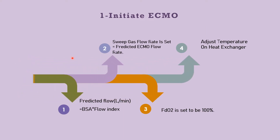After connecting the circuit, we will start to initiate ECMO. Start by calculating predicted flow, which is equal to the surface area multiplied by the flow index. Then we will adjust the sweep gas, which at startup should be equal to the predicted ECMO flow rate.